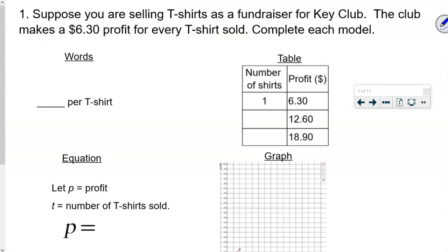All right, here's your example. Suppose you were selling t-shirts as a fundraiser for Key Club. The club makes $6.30 profit for every t-shirt sold. And then it says, complete each model. Now, I don't want you to write anything just yet. I'll tell you when it's time to write. But I want us to understand what we are going to be doing. Understand the situation.